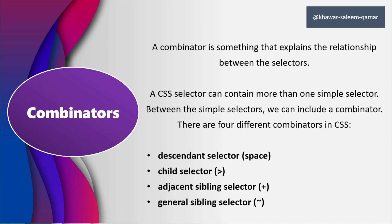Now let's move on to our next topic: combinators. There are different selectors inside CSS and when we want to combine those selectors to select elements we use combinators. These combinators are used to show the relationship between different selectors used in CSS for styling. There are four combinators in CSS: the descendant selector (space), the child selector (>), the adjacent sibling selector (+), and the general sibling selector (~).